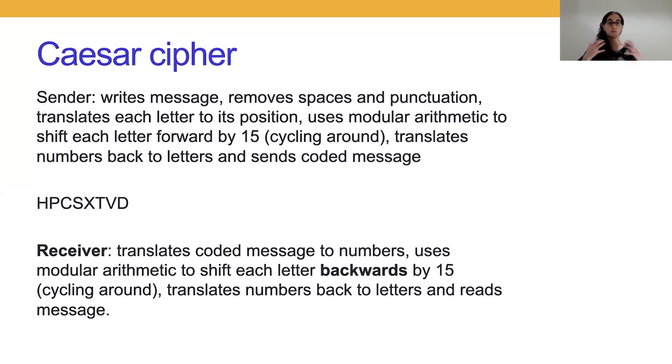So with Caesar cipher, the sender, after writing the message, removing the spaces and punctuation, writing uppercase versions of the letters, and translating the letters to numbers, uses modular arithmetic to shift forward and receive the letters that need to be part of the coded message. The receiver then has to recover the original intended meaning of the message from H, P, C, S, X, T, V, D. But the receiver has an additional piece of information. The receiver and the sender agreed ahead of time that the shift will be 15. So the receiver can translate this coded message to numbers and shift backwards by 15 using modular arithmetic to translate back to the original message. And that way Julius Caesar and his army generals or the sender and the receiver using the Caesar cipher can communicate securely using this cipher.